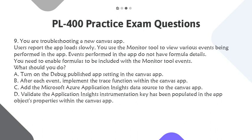A. Turn on the Debug Published App setting in the Canvas app. B. After each event, implement the trace function within the Canvas app. C. Add the Microsoft Azure Application Insights Data Source to the Canvas app. D. Validate the Application Insights Instrumentation Key has been populated in the app object's properties within the Canvas app.